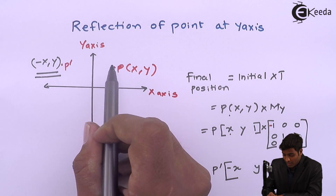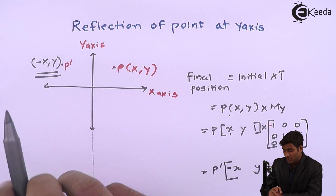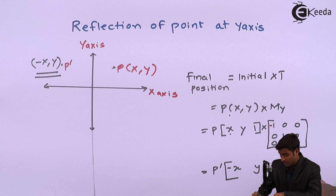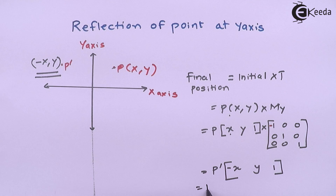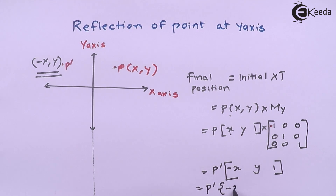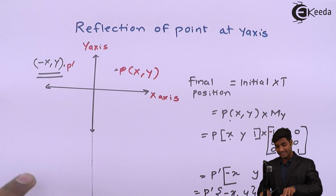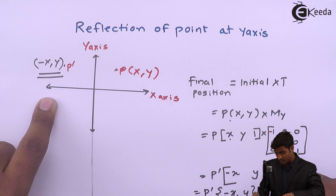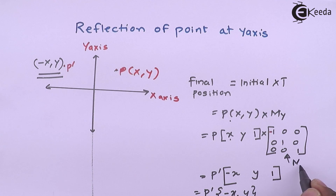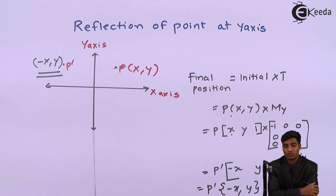After multiplying the matrices, I get the final position P-dash as (-x, y, 1). Converting this matrix back into coordinate form, P-dash = (-x, y). This is the same result we stated at the beginning, so we have proved that reflection of a point about the y-axis gives (-x, y).